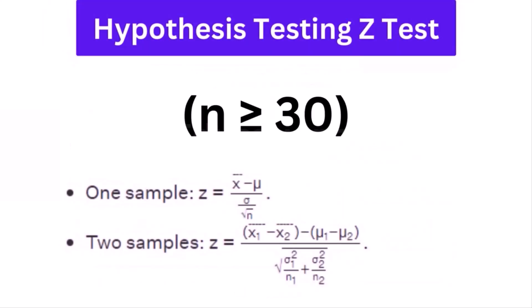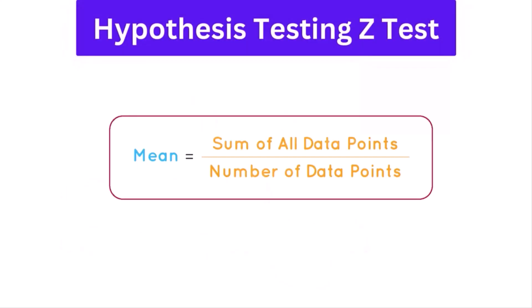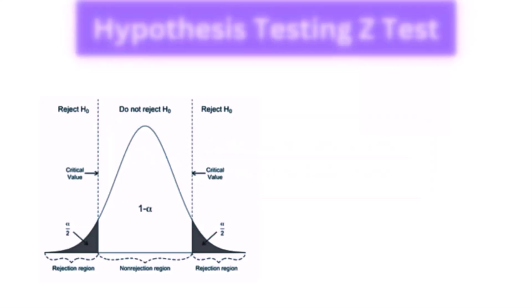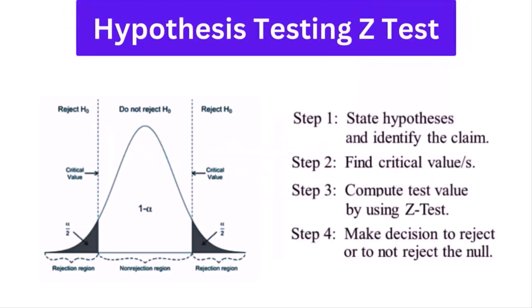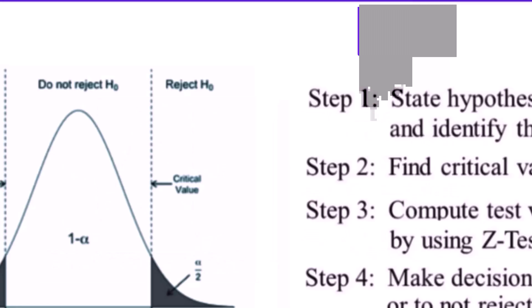1. Hypothesis testing Z test: The Z test is a way of hypothesis testing that is used for a large sample size (n greater than or equal to 30). It is used to determine whether there is a difference between the population mean and the sample mean when the population standard deviation is known. It can also be used to compare the mean of two samples. It is used to compute the Z test statistic.